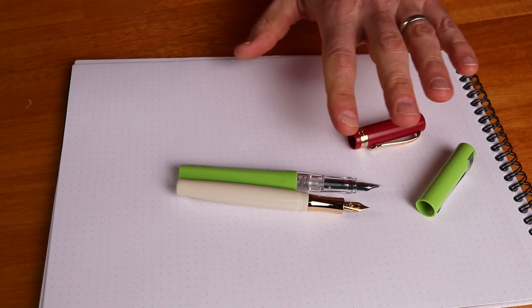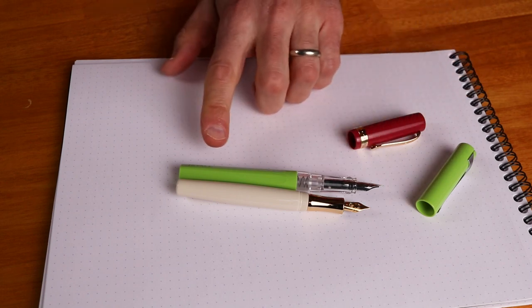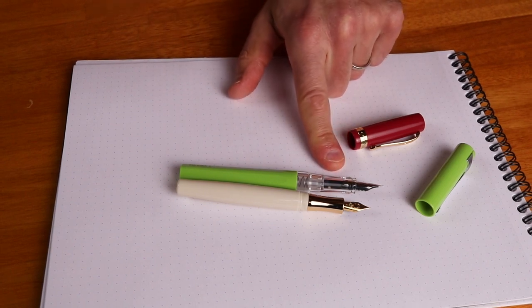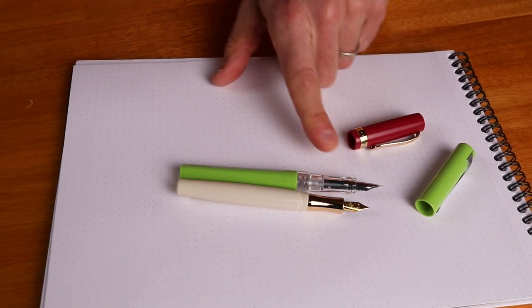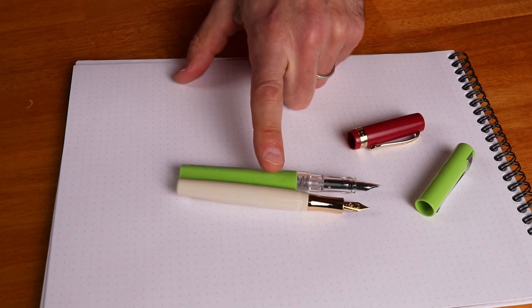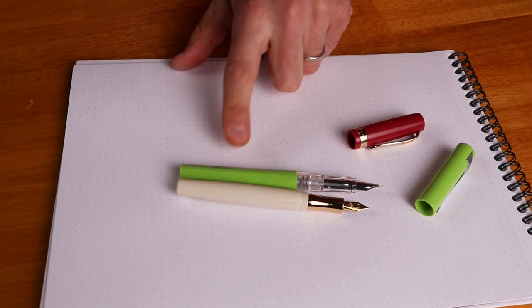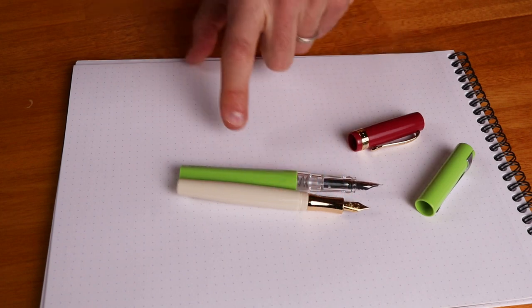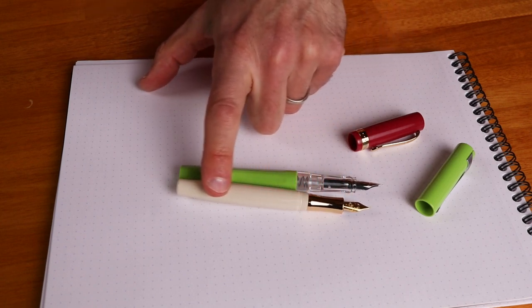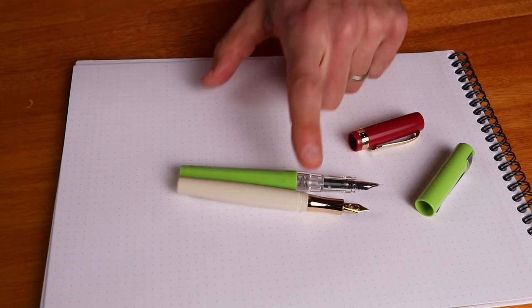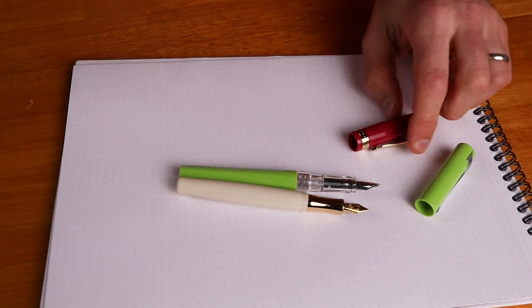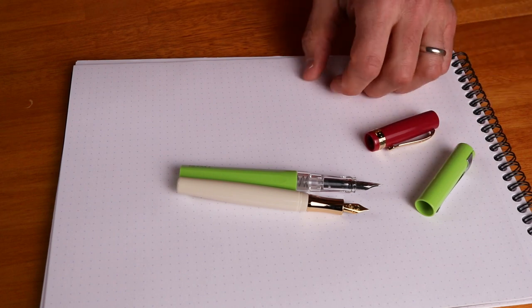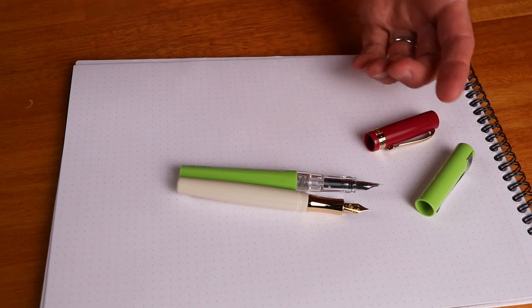I put the Student next to a TWSBI Swipe here, and you can see the Student is just a touch shorter. But don't be fooled—the Student actually feels a bit heavier in the hand, especially with the metal nib section. It's got a really nice feel, and the barrel also has a bit of a sweep on it, so it looks like a really classy traditional pen, not quite as modern as the Swipe or Lamy Safari.